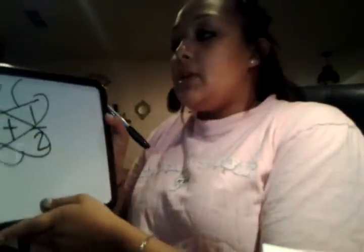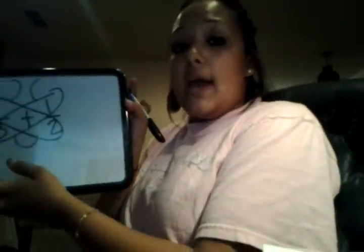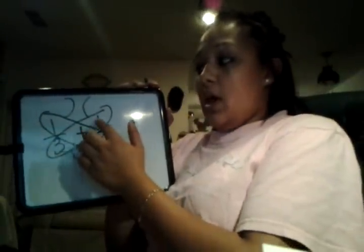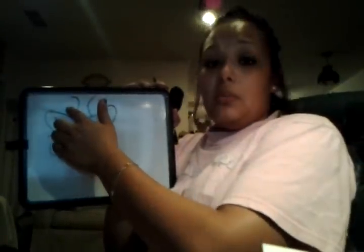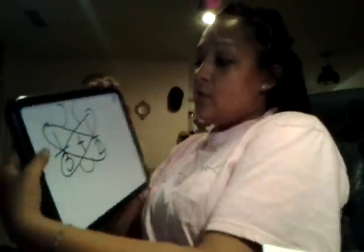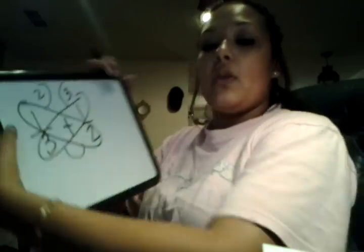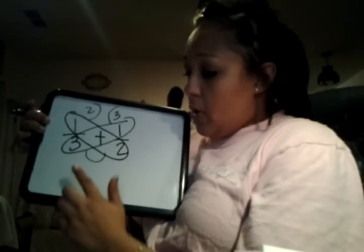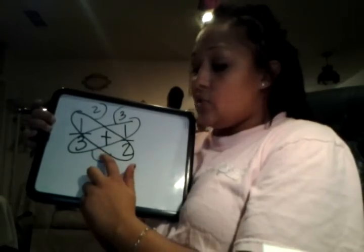The next step is to cross multiply. We will do 1 times 2 and 3 times 1. The answer for 1 times 2 will go up here, and the answer for 3 times 1 will go up here. So 1 times 2 is 2, and 3 times 1 is 3. Now for the bottom part, 3 times 2 is 6, and 6 will go in the little bottom area.